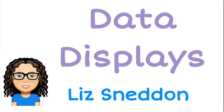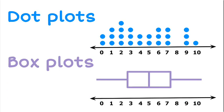Hi, it's Liz Sneddin. Let's have a look at some data displays. So there's two types we're going to have a look at here. We're going to look at our dot plots and our box plots. Sometimes the box plots are called box or whisker graphs as well.